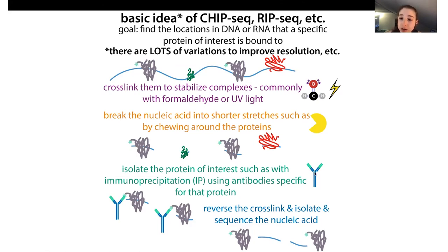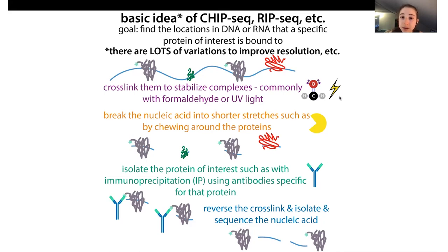With ChIP-seq or RIP-seq and all the different varieties, the idea is that you crosslink a protein to nucleic acids - DNA or RNA. Then you chew up the RNA or DNA around them, isolate the protein you're interested in using immunoprecipitation with an antibody specific for that protein, then reverse the crosslink and isolate and sequence the nucleic acid to see where it was bound. You can look for common motifs or sequences it's binding to, maybe finding specific genes and regulating them.